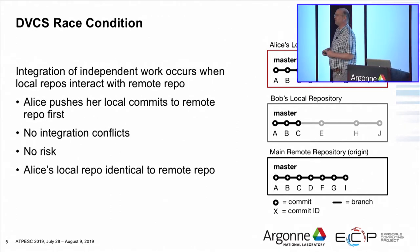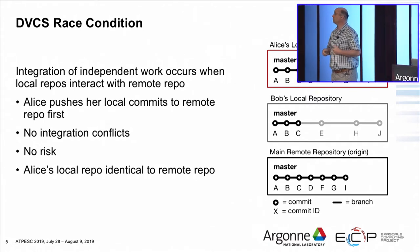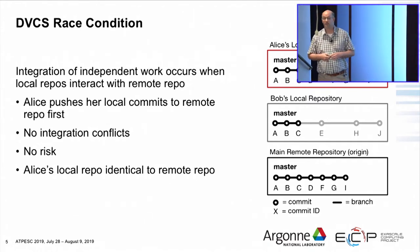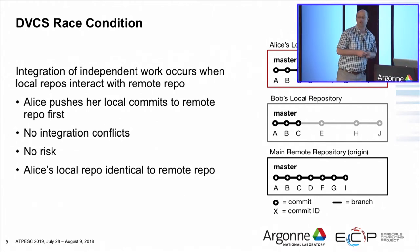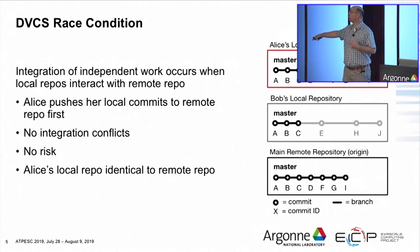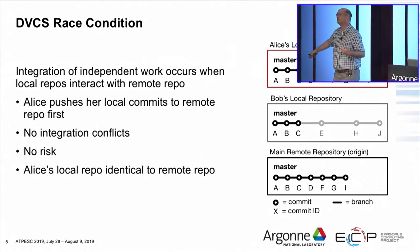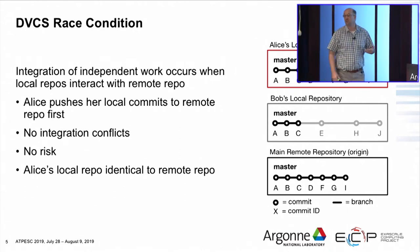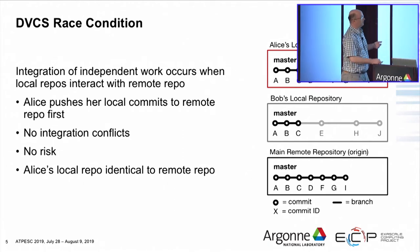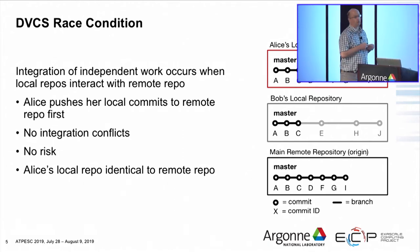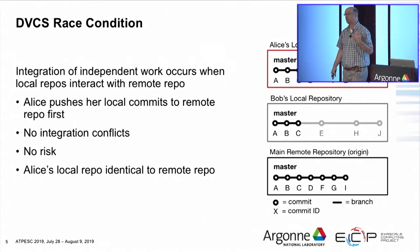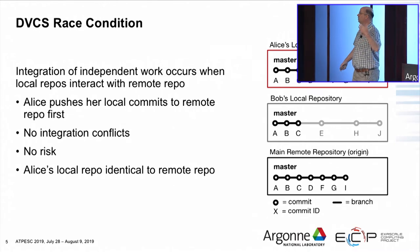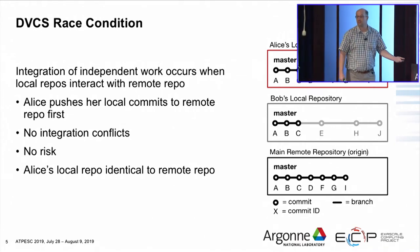When you do this type of integration, there tend to be race conditions. In this example, Alice is the first person who tries to integrate her work by pushing to the remote repository — she wins the race condition. This is very easy, simple, and there's no risk. Her Git just takes those four commits and sends them to the remote repository, appending them to the master branch. Now her local repository and the remote are both synchronized again and she's integrated her work.